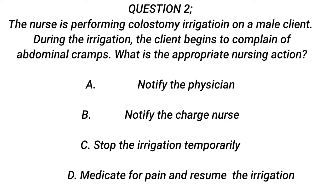Question 2. The nurse is performing colostomy irrigation on a male client. During the irrigation, the client begins to complain of abdominal cramps. What is the appropriate nursing action? A. Notify the physician. B. Notify the charge nurse. C. Stop the irrigation temporarily. D. Medicate for pain and resume the irrigation.